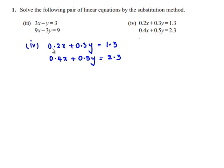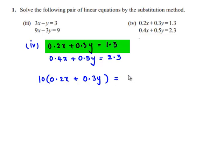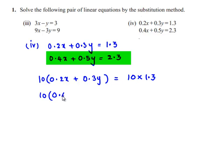So multiply the first equation by 10. We get 10 times (0.2x + 0.3y) = 10 times 1.3. In the similar manner, let us multiply the second equation by 10. We get 10 times (0.4x + 0.5y) = 10 times 2.3.